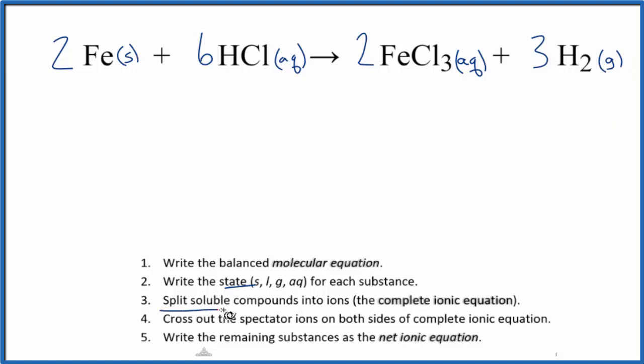Next, we're going to split the soluble compounds apart into their ions. And that's going to be the complete ionic equation. So the only thing we can split apart are the things that are dissolved, the aqueous compounds. We don't split solids apart. Iron is a single element, so we're not going to split that apart. And we don't split gases apart.